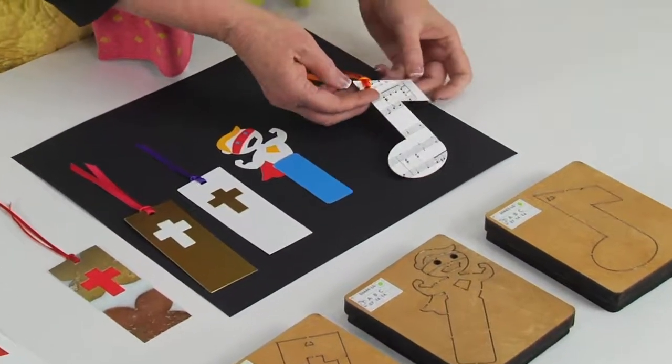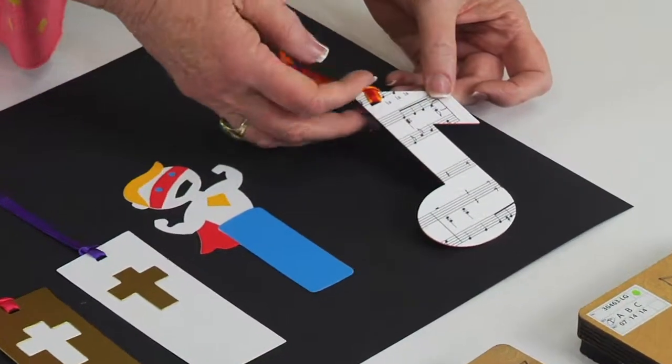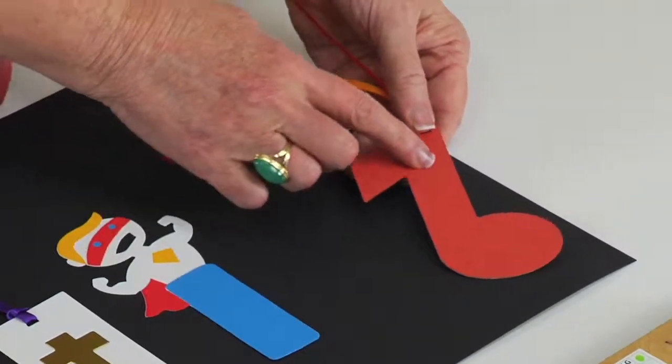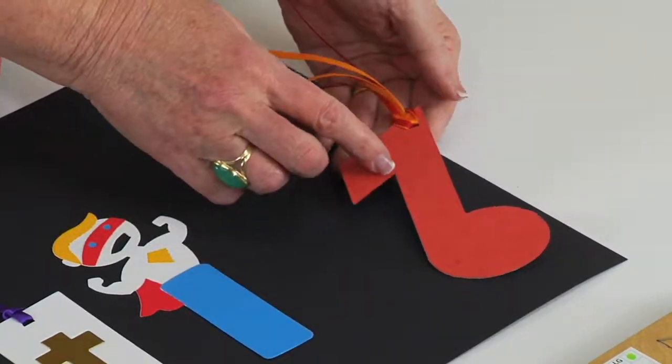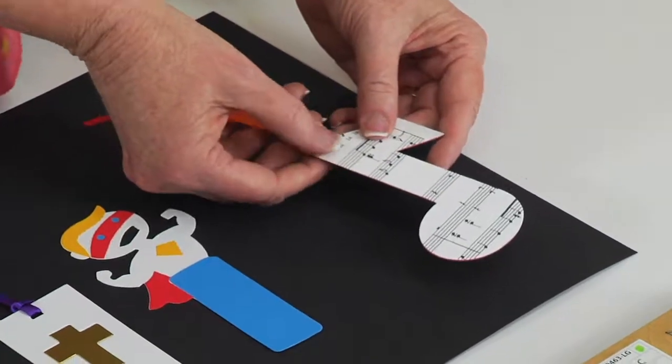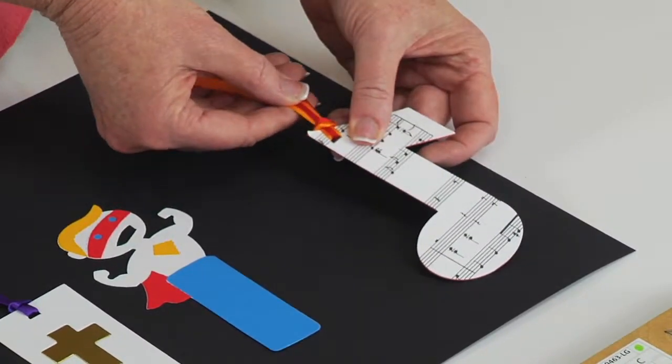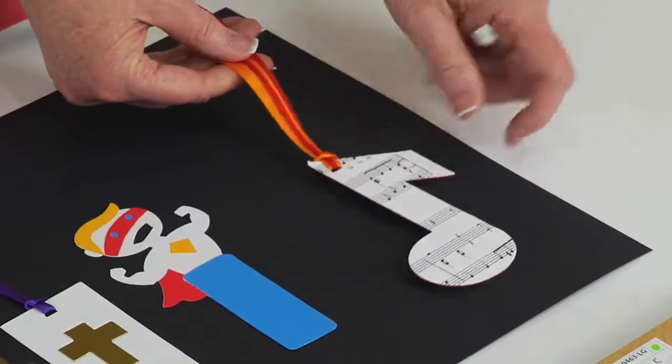Now, the music note, if you look at it, you'll notice that what I did was I just cut music paper, and I just give it a little more body. I cut poster board as the backing for it. The die even has the hole, which makes it super simple to thread the ribbon through to finish it off, and it's really cool.